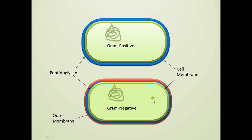In the gram-negative bacterium, it has three layers to its cell envelope: the cell membrane, a thin layer of peptidoglycan consisting of only one or two sheets, and then a third structure — the outer membrane. The outer membrane contains LPS and porins. That concludes our discussion on gram-positive versus gram-negative bacterium.